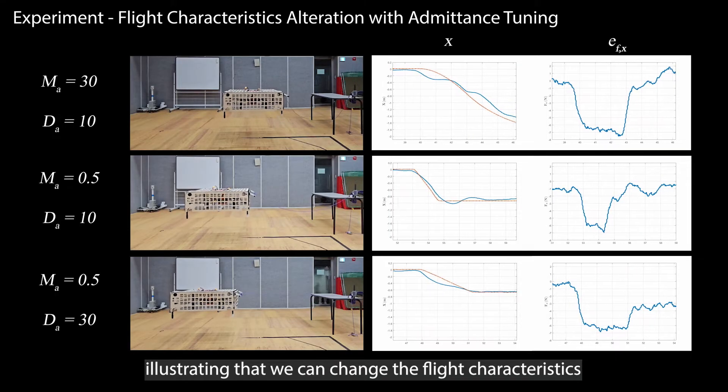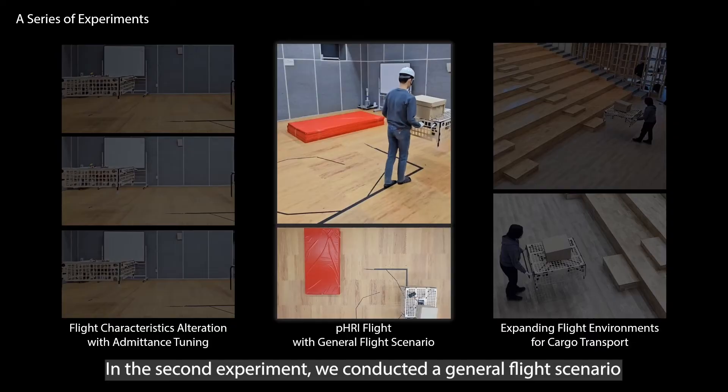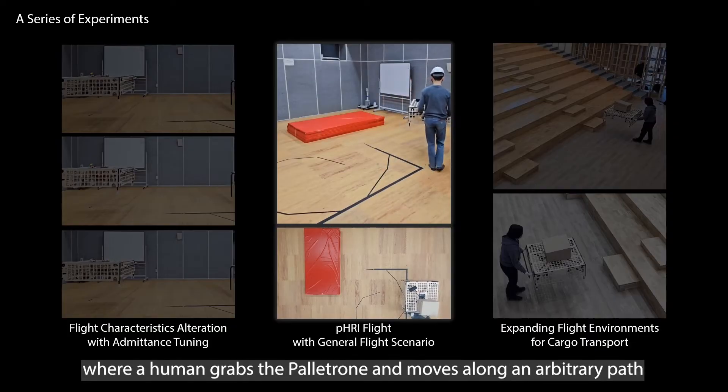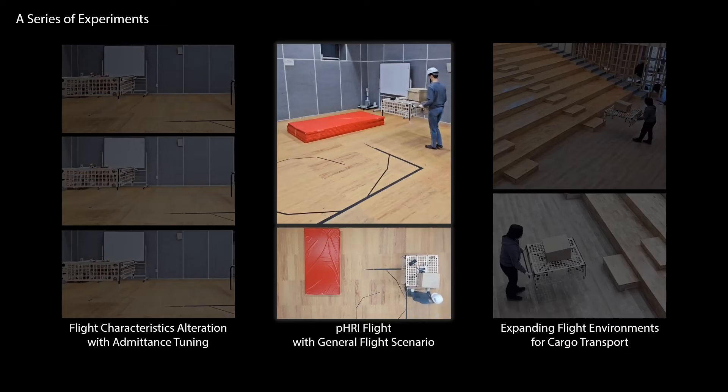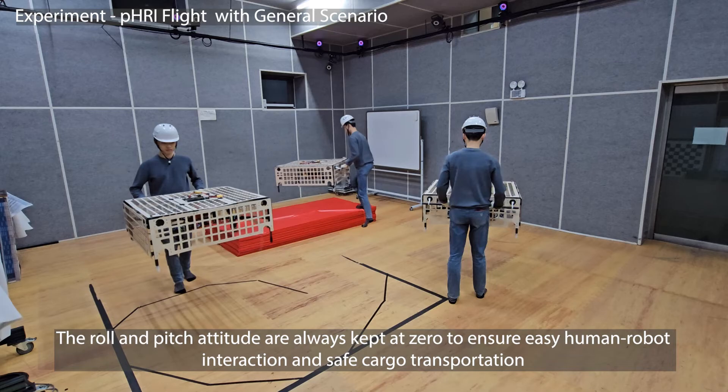Illustrating that we can change the flight characteristics depending on human preference. In the second experiment, we conducted a general flight scenario where a human grabs the Palletron and moves along an arbitrary path. The roll and pitch attitude are always kept at zero to ensure easy human-robot interaction and safe cargo transportation.